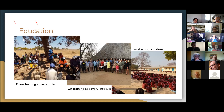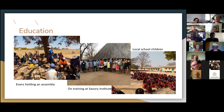Education is a big part of the project, including training local children, community members from the trust, and people from local communities. They are also attending external courses to increase their knowledge, such as visiting the Savory Institute to learn about holistic grazing.